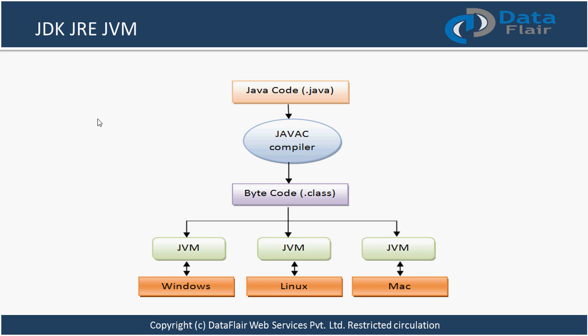When we talk about Java, we have to be clear on these three basic terms: JDK, JRE, and JVM. JDK stands for Java Development Kit — when you want to create software in Java, you require a kit to make your files, and that is JDK. Once you create your files, those files will require some inbuilt functions and libraries provided by Java, and that's your JRE, which is Java Runtime Environment. Then you require a platform where you can run your application, and that's JVM, which is Java Virtual Machine.